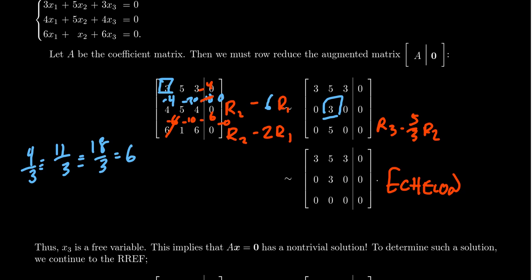The reason this is important is that when we reach echelon form, we can see the nature of the solution set. Because there is a pivot in the first position, variable 1, x1, will be a dependent variable. Because there's a pivot in the second column, x2 will be a dependent variable. But there's no pivot in the third column, and as such, this indicates that we have a free variable in our system.